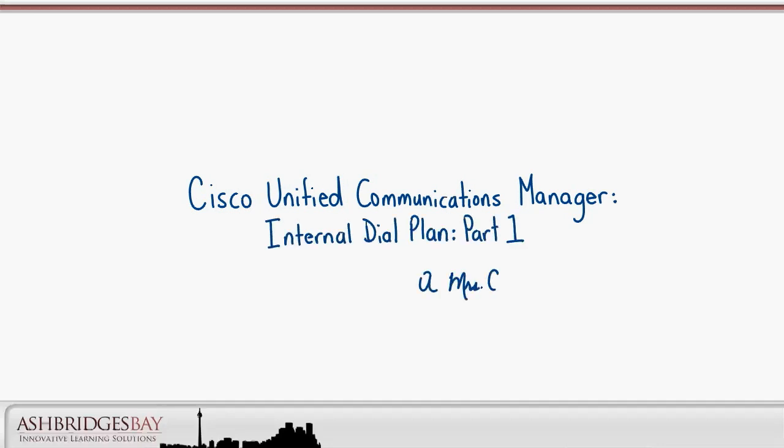In other whiteboard drawings in the Dial Plan playlist, we discuss route patterns, partitions, calling search spaces, route lists, and how they are used to build a Cisco Dial Plan. This whiteboard drawing discusses building an internal dial plan based on a UC8.x SRND for deployments using the North American Numbering Plan. After this drawing, we'll do one for external dial plans.